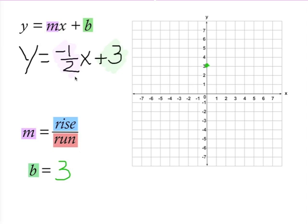So it looks like, since it's a fraction, it's actually a bonus—it gives me my rise and my run. So I've got negative 1 over 2, and my rise is negative 1, and my run is 2.